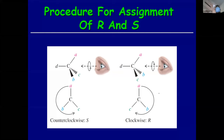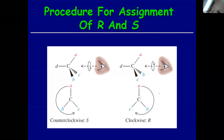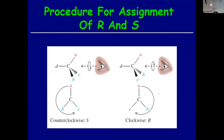Once the priorities are assigned, put the lowest priority at the back. Let's say we have this structure - assign the red group as the lowest priority group and put it behind. Now you have one, two, three and you see if they're going to be clockwise or anti-clockwise. A, B, C - if they are clockwise it's going to be R; if they are anti-clockwise or counterclockwise it will be S.